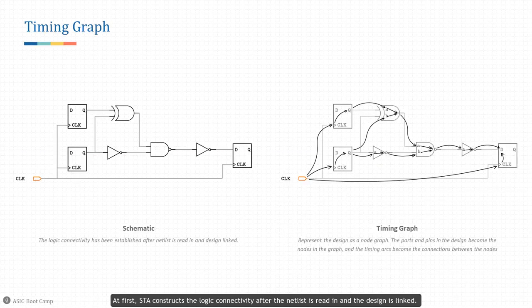At first, STA constructs the logic connectivity after the netlist is read in and the design is linked. During a timing update, this database is populated with timing values from delay calculation. STA converts the actual circuit into a map of nodes and calculates the delay between any two nodes.